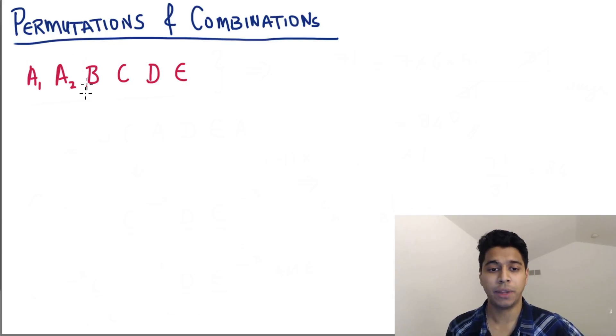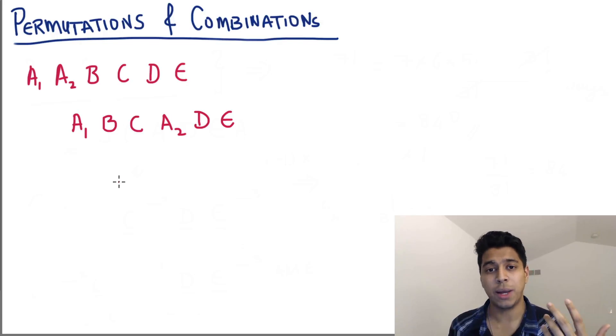Alright, now let's look at an arrangement that could happen. Suppose you have something like A1, B, C, A2, D and an E. Alright, this arrangement is valid because it's different from the initial arrangement, but there's a problem here. What if I switch the As? Isn't it the same arrangement? Do we count it as two or we count it as one? To understand this, let's look at it in a different way.